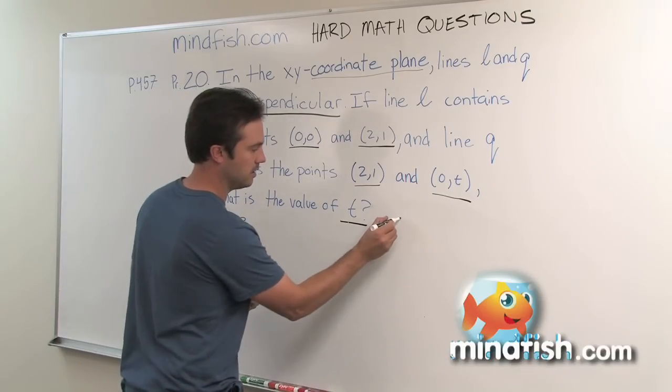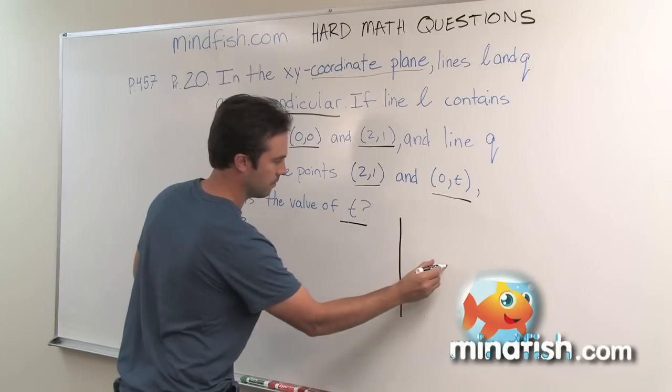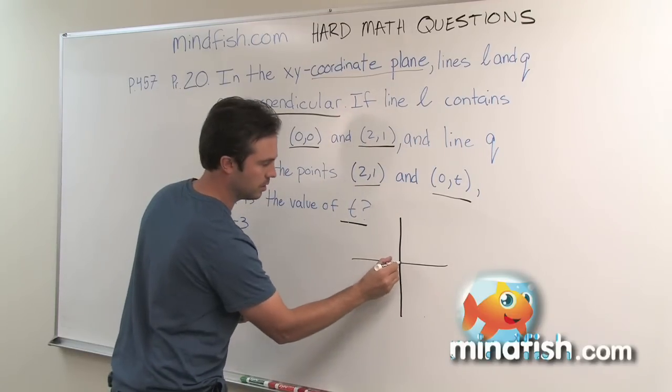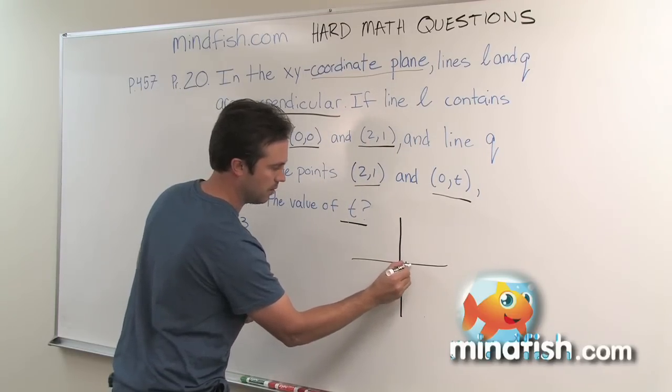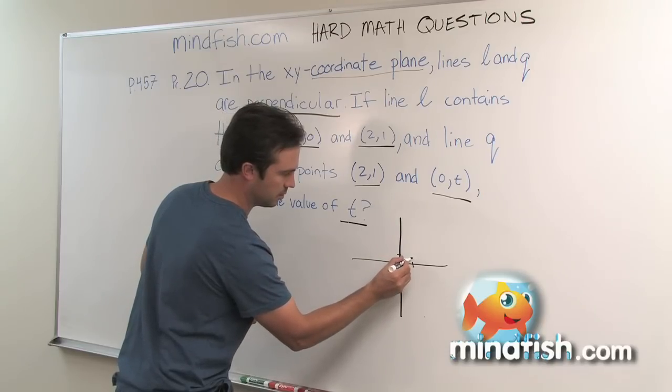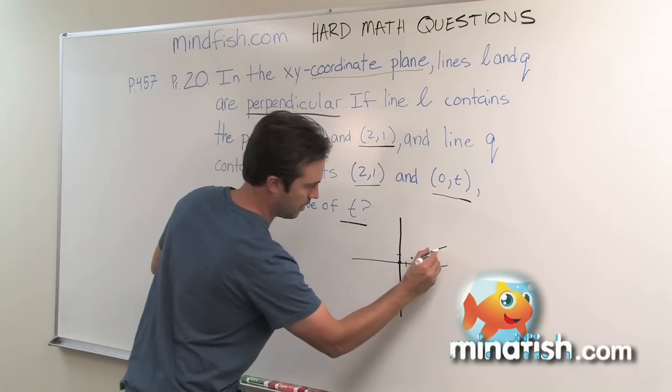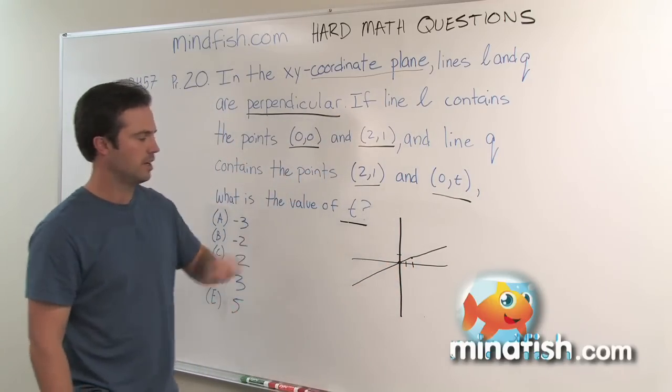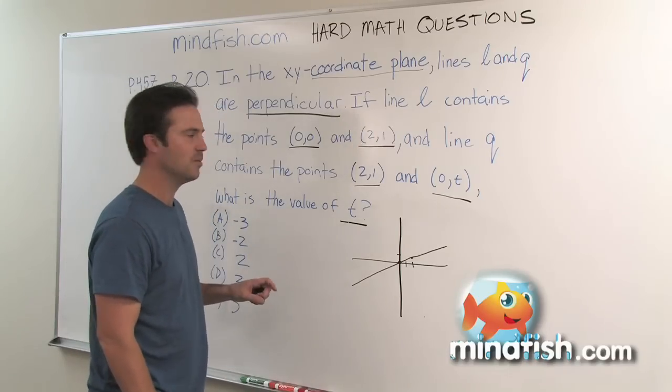So if we draw a coordinate axis and we first label our two point zero zero which is the origin and the point two one. Now I want to be very careful to draw my units as accurately as possible. That way I'm going to get a very accurate representation for the lines in the problem. And you can see that my straight line drawing needs a little bit of help here.